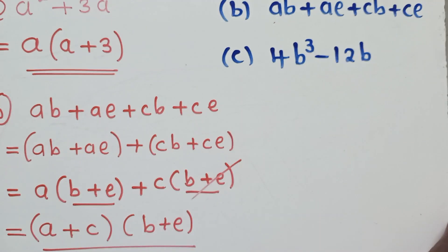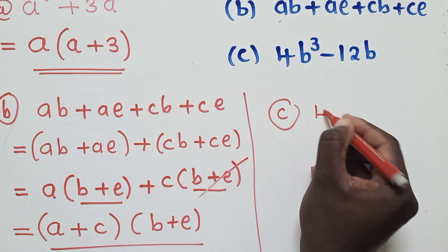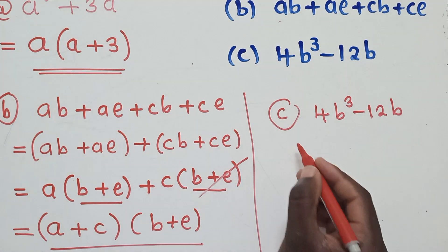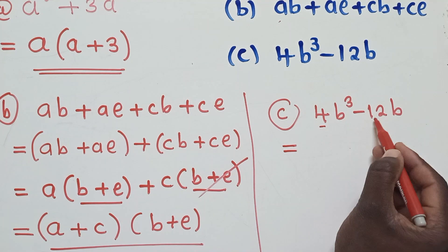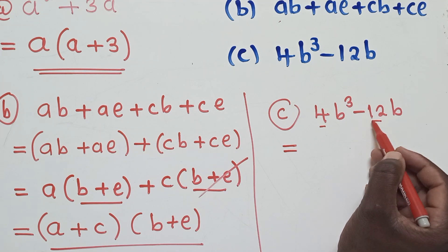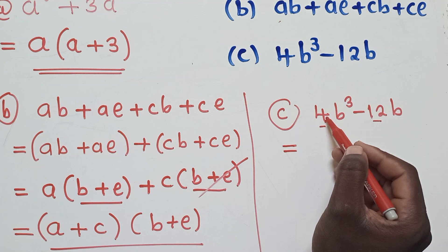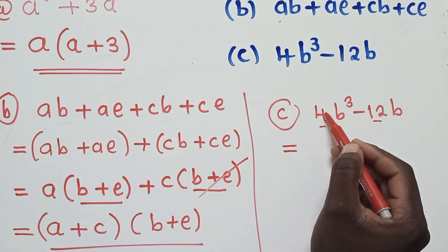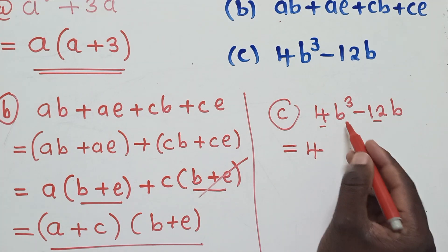For question C we have 4b³ + 12b. We check what is common numerically — 4 is found in both terms, since 4 goes into 12. To factorize completely we must take out 4, not just 2, so that nothing else remains as a common factor.